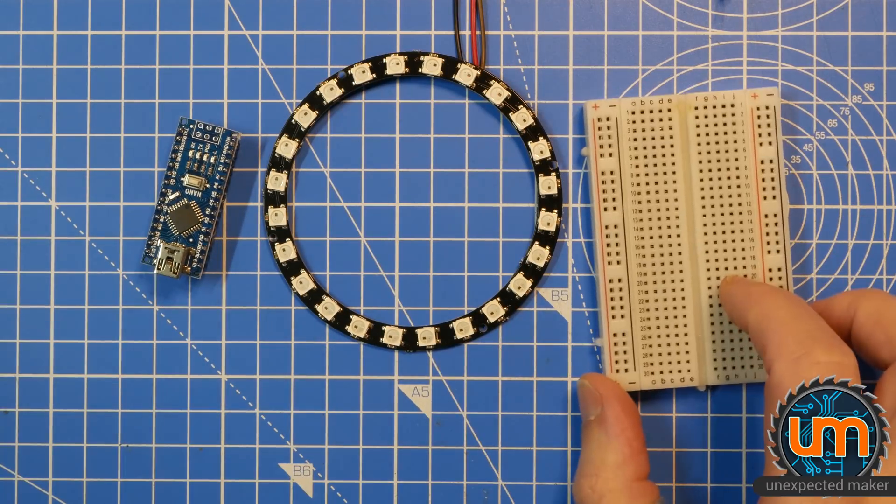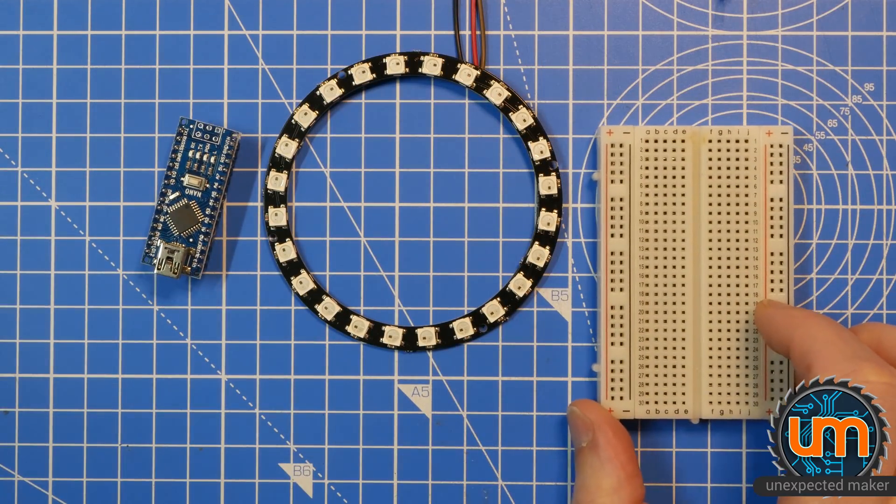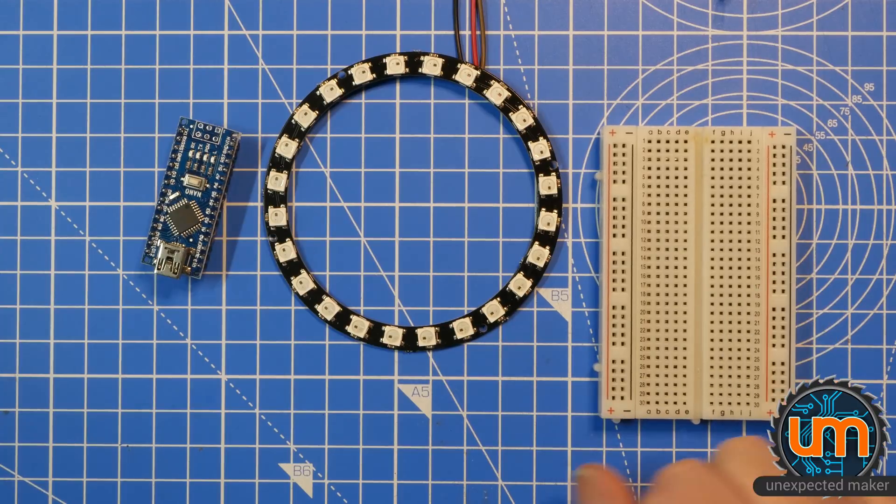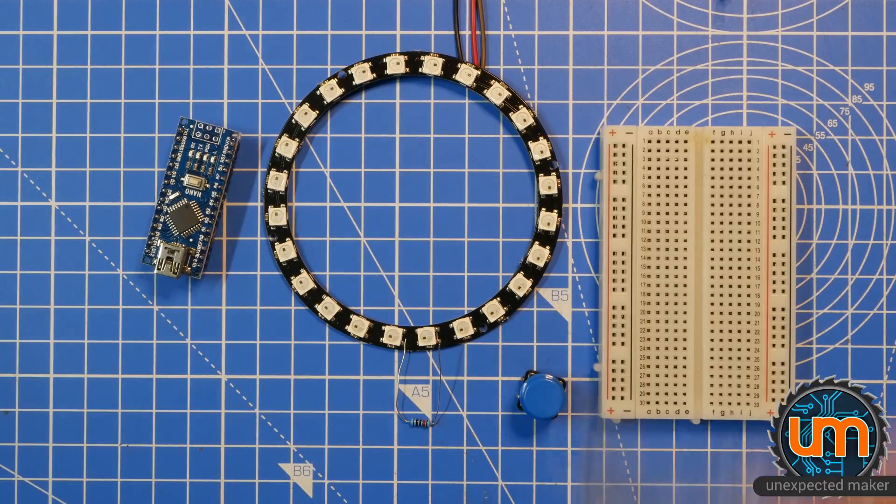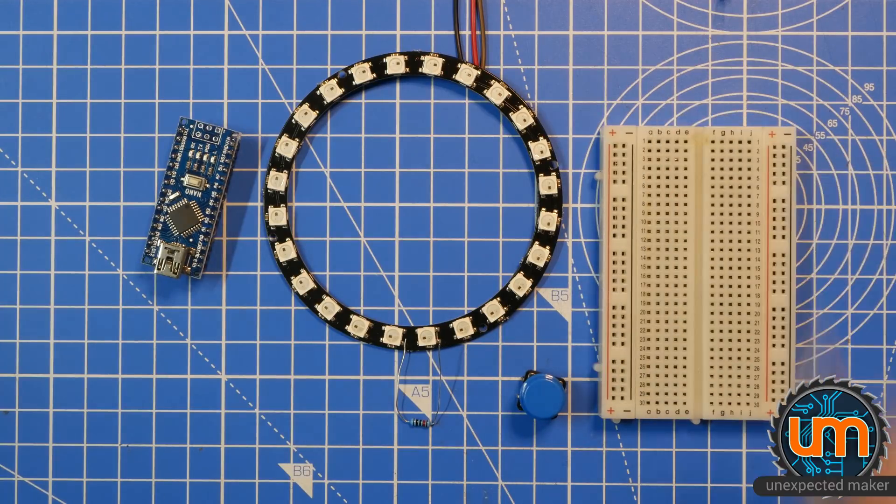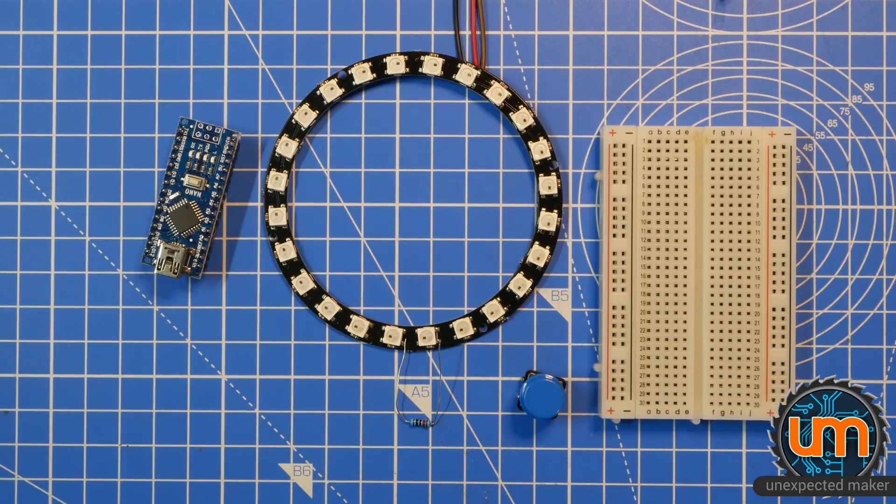Okay, what else do we need? A breadboard, because this is just going to be a breadboard project. I might make it a bit sturdier and put it on a protoboard at some point. We're going to need a button. We're going to need a 10K resistor. You can see it just there. And we're going to need some breadboard wires. That's really it. It's a fairly simple build. Let's get going.